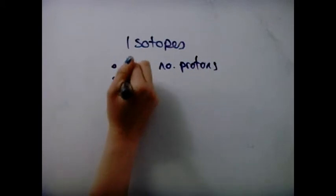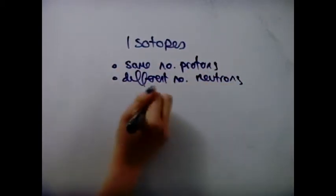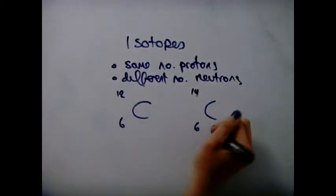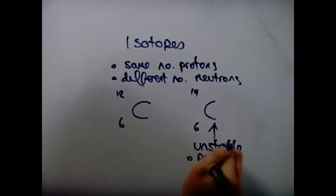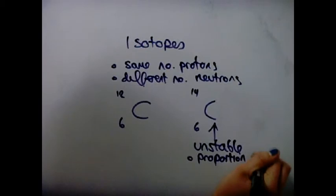Isotopes of an element have the same number of protons but different numbers of neutrons in the nucleus. Some are unstable because of the proportion of neutrons and protons and the way they decay depends on this.